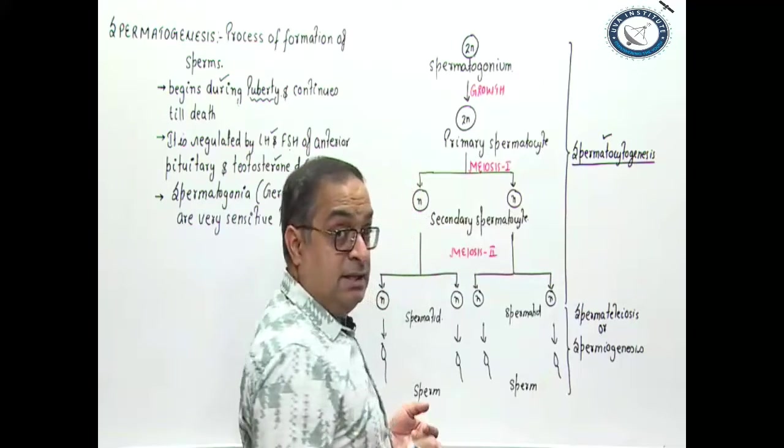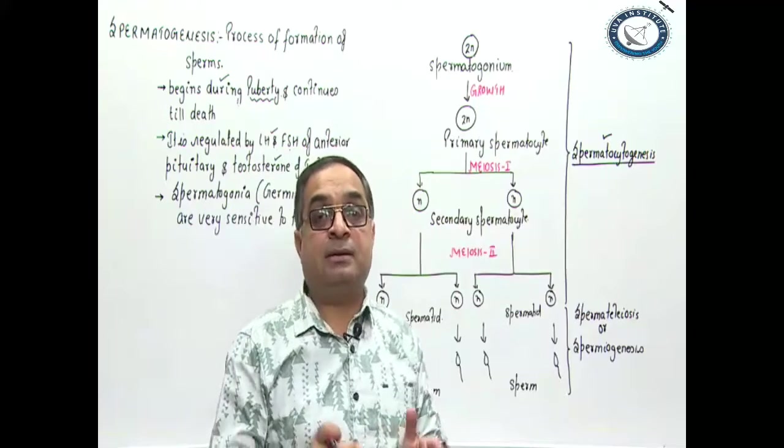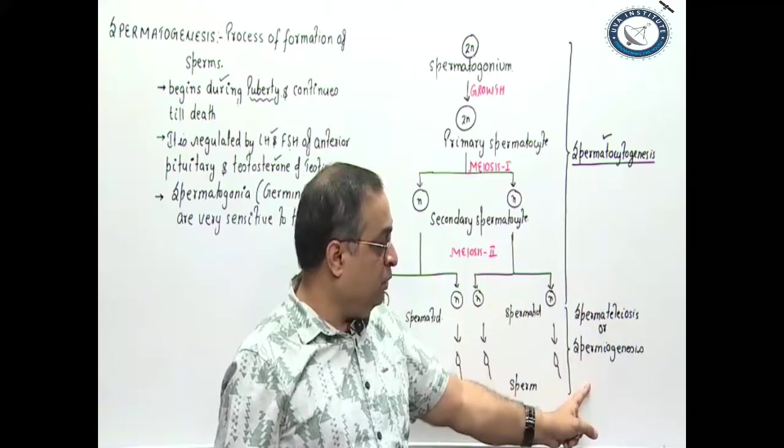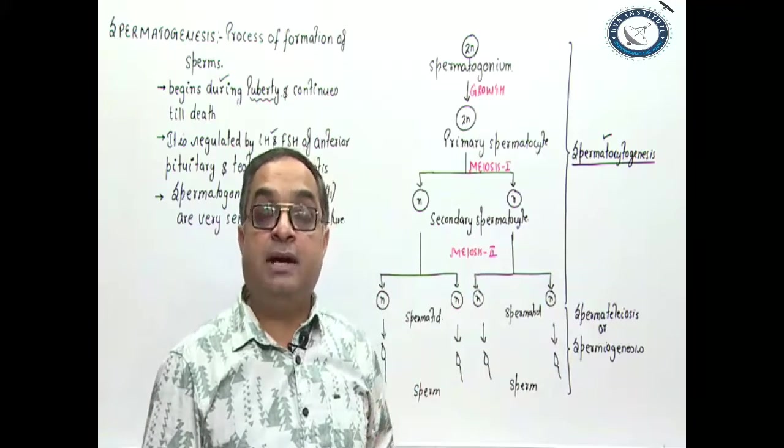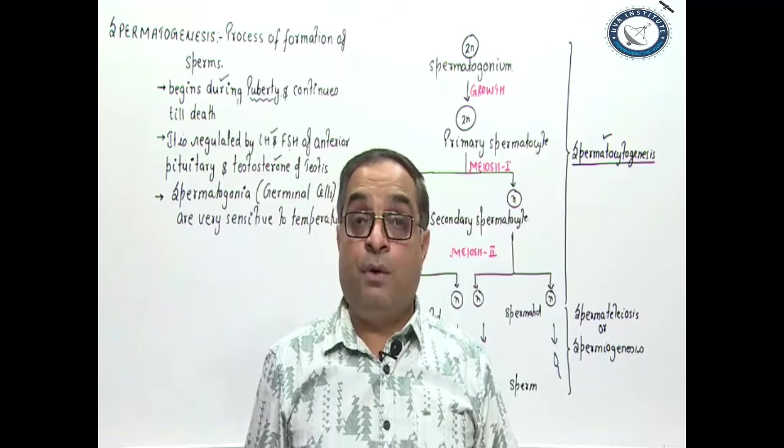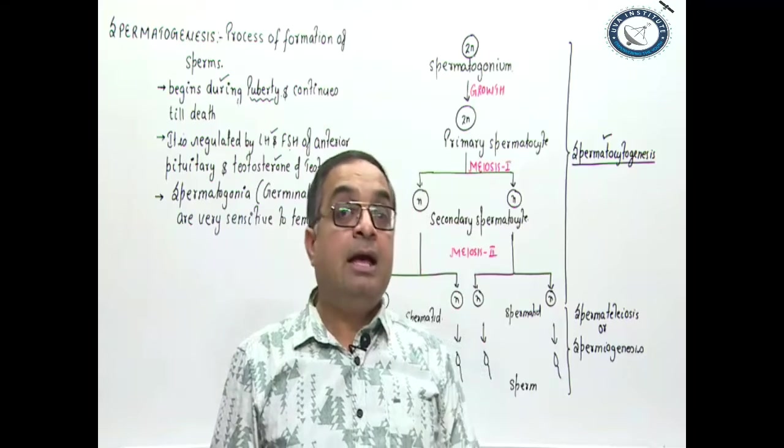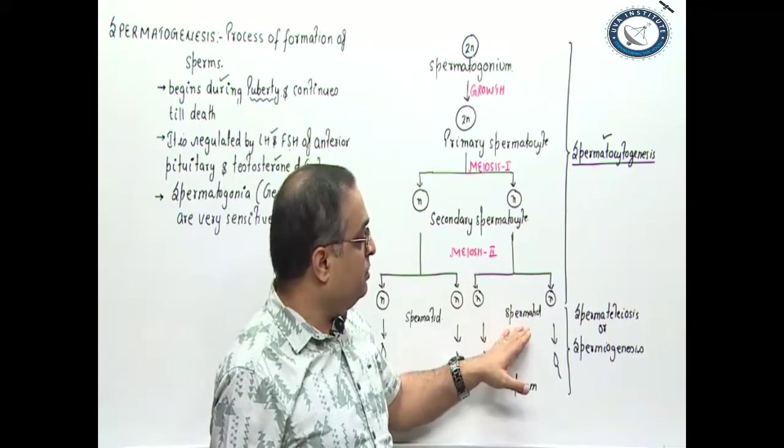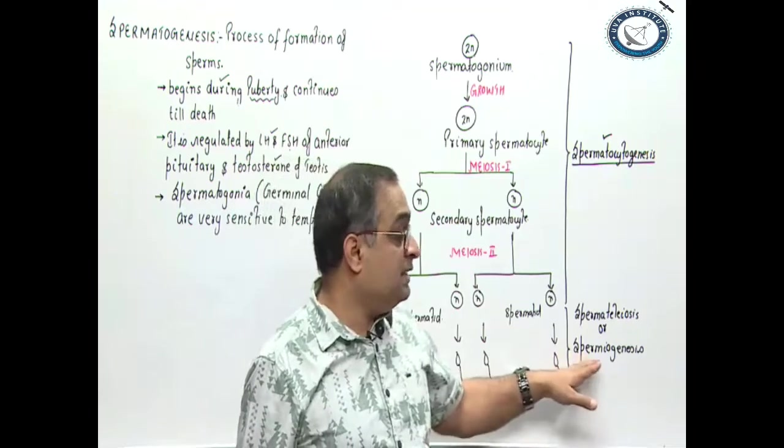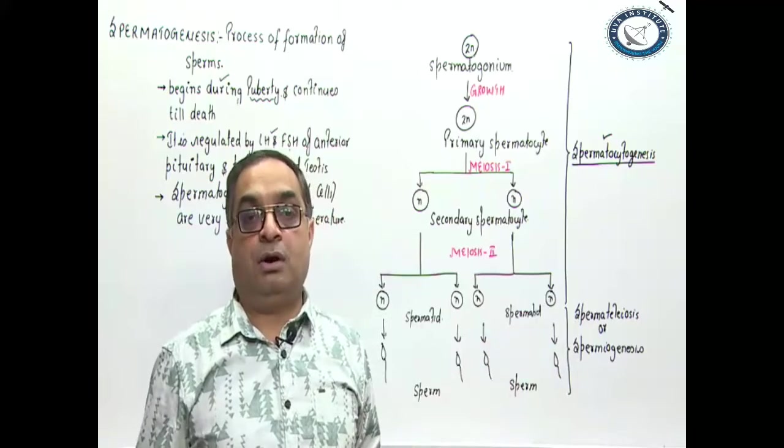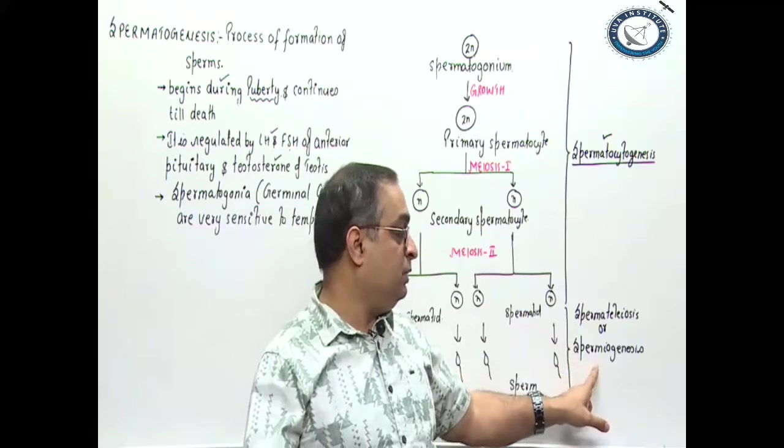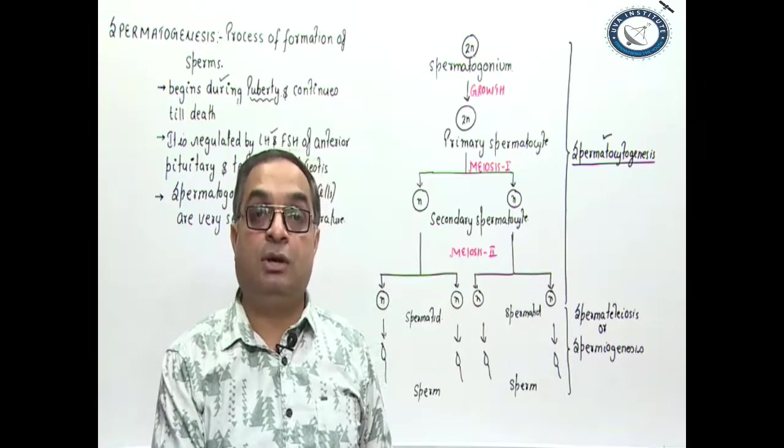This process of formation of spermatids from spermatogonium is called spermatocytogenesis. We can say that overall spermatogenesis can be divided into two stages: spermatocytogenesis and spermiogenesis. Spermatocytogenesis is formation of spermatids from spermatogonium. And finally, these spermatids are differentiated into sperms. This process of differentiation of the spermatids into sperms is what is called spermiogenesis or spermatoleosis.